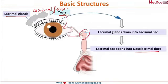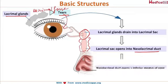From the lacrimal sac, the tears drain into the nasolacrimal duct. The nasolacrimal duct opens into the inferior meatus — this is a frequently asked question. So the nasolacrimal duct drains into the inferior meatus in the nose. This is an overview of the tear drainage system.